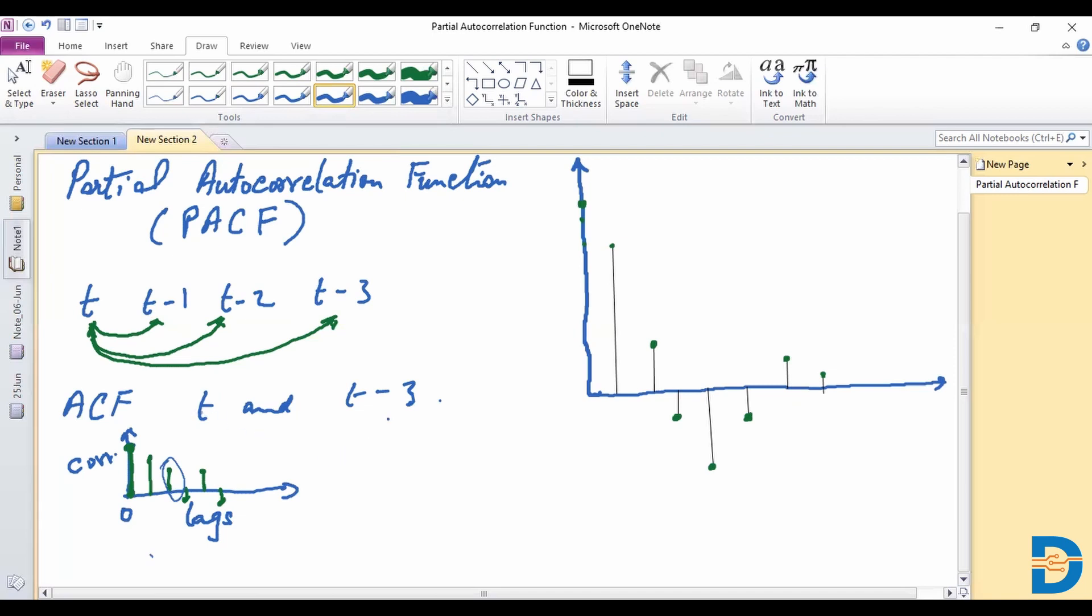Which is to say for t to be related to t minus 3, there is some influence that t has on all the previous lags as well. And you could say t minus 1 has an influence on t minus 2 and so on, as well as the influences of t minus 1 on t minus 3. So all these intermediate correlations are also coming into account as far as the autocorrelation function is concerned.